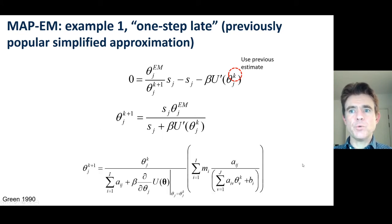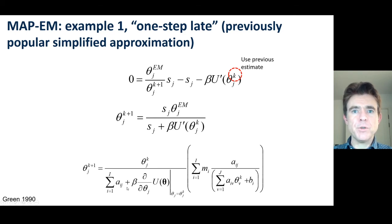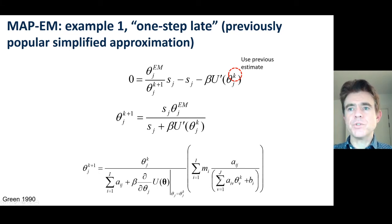When spelled out, you get a very recognisable expression: it's just the regular MLEM update with a modification in the denominator. We have the familiar forward projection, ratio, back project, multiply, sensitivity image, but with an offset of beta times the gradient of the energy evaluated at the current estimate.